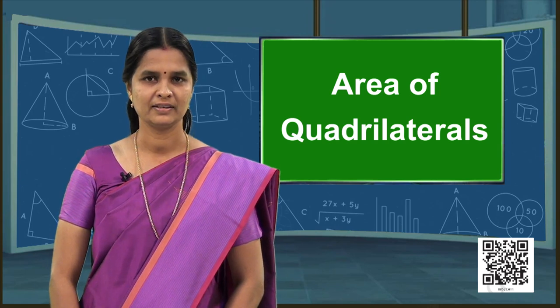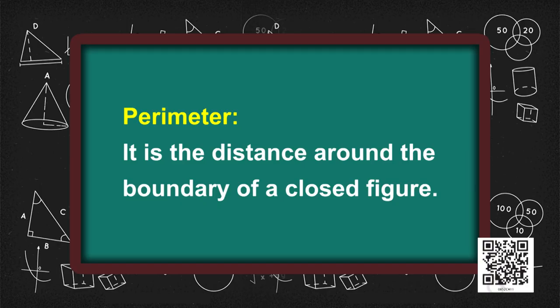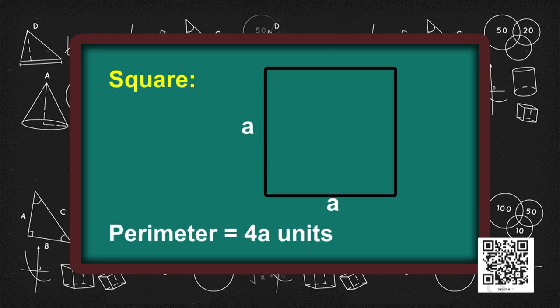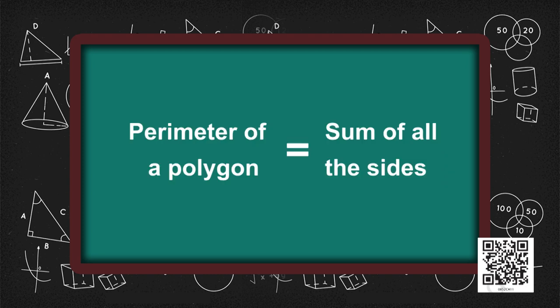Before starting, let us quickly recall what we have studied in our previous classes. Perimeter is the distance around the boundary of a closed figure. For a square of side a units, perimeter is equal to 4a units. Perimeter of a rectangle of length b units and breadth a units is 2 times a plus b. From these examples we can say that the perimeter of any polygon can be obtained by adding all the sides — that is, perimeter of a polygon is equal to sum of all the sides.